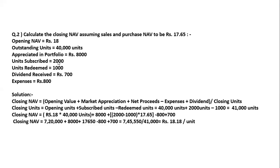For units subscribed — 2,000 into 17.65 — this is the investment amount from new unit holders. Then minus units redeemed — 1,000 into 17.65 — this is the money people are withdrawing from the mutual fund. Plus ₹700 dividend received, which is dividend income for the fund. Minus ₹800 expenses.